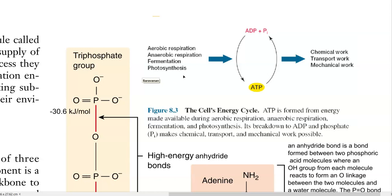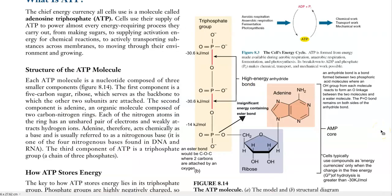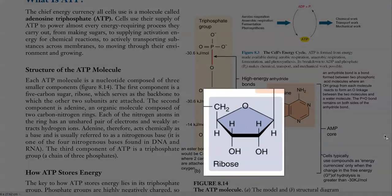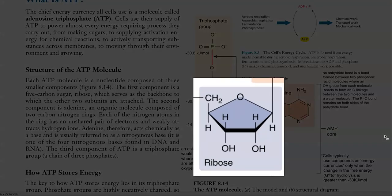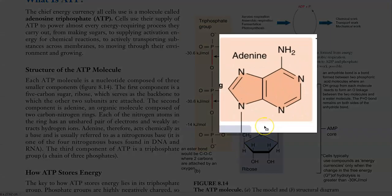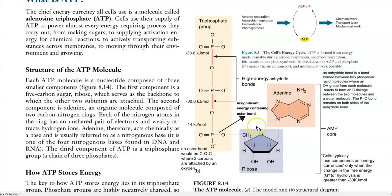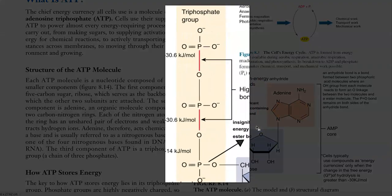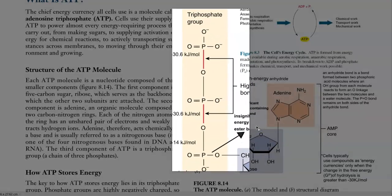This ATP is employed for various work such as chemical work, transport, and even mechanical work inside the cells. Now we look at the structure of the ATP molecule. It is a nucleotide composed of three smaller components: a 5-carbon ribose sugar serving as a backbone, adenine which is a double-ringed nitrogenous molecule, and a triphosphate group — that is, three phosphates attached to the sugar.